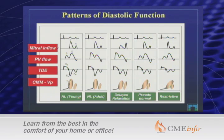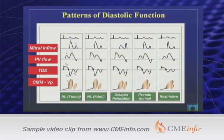These are some of the tools, and we go over this very carefully in the course: the typical mitral inflow, pulmonary vein, tissue Doppler, Keller M-mode — whether you're young normal or adult normal — delayed relaxation, pseudonormal, restrictive. We have these different algorithms and new guidelines.